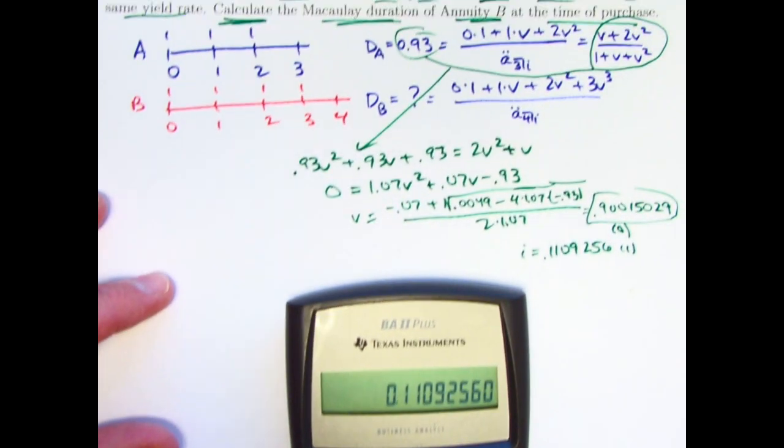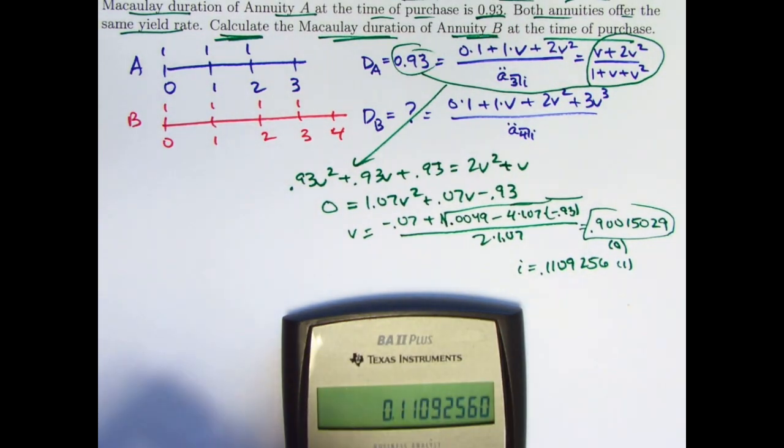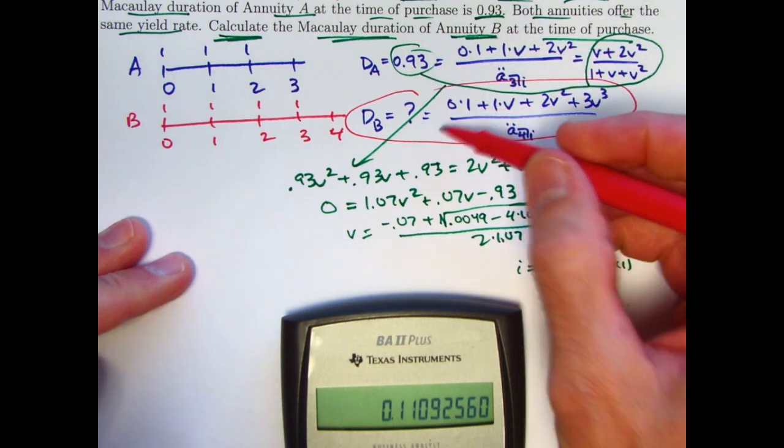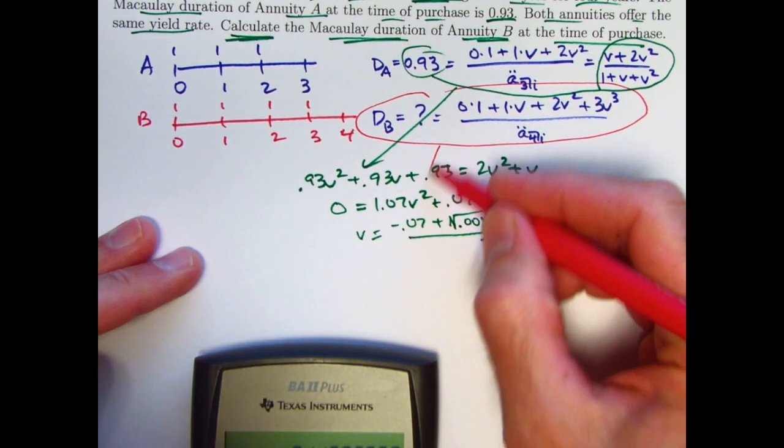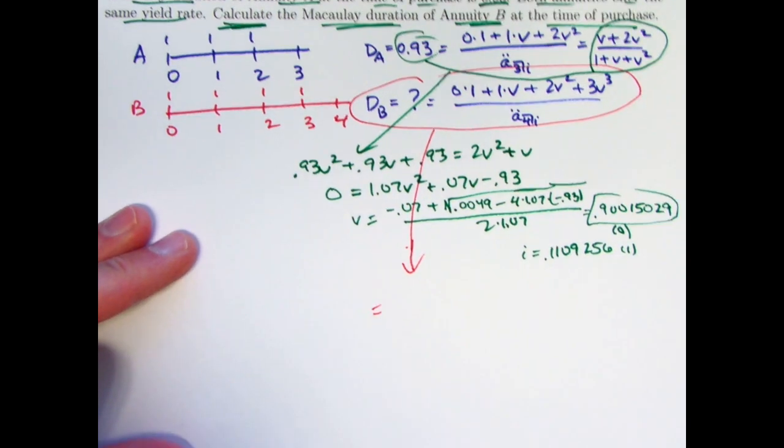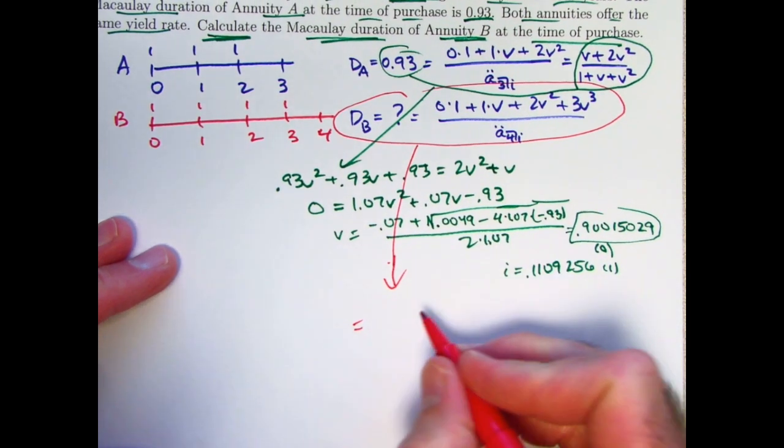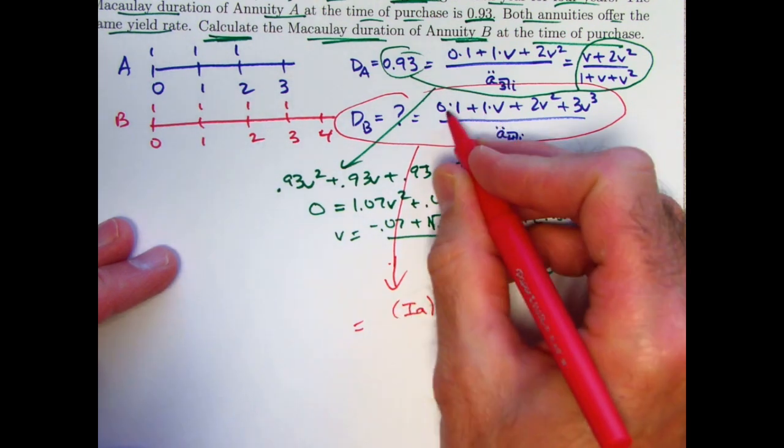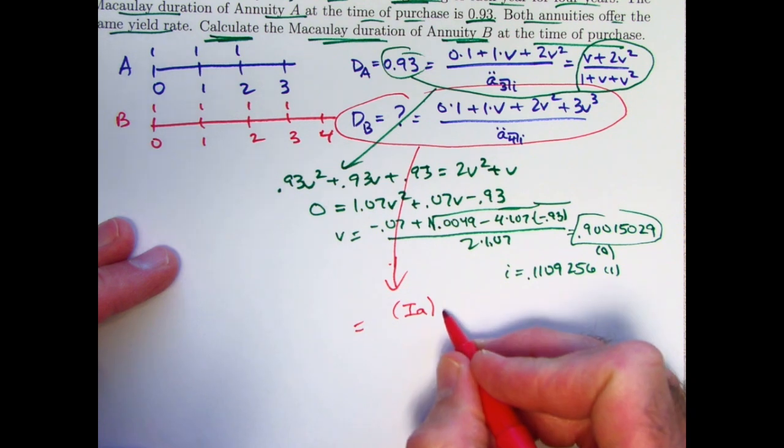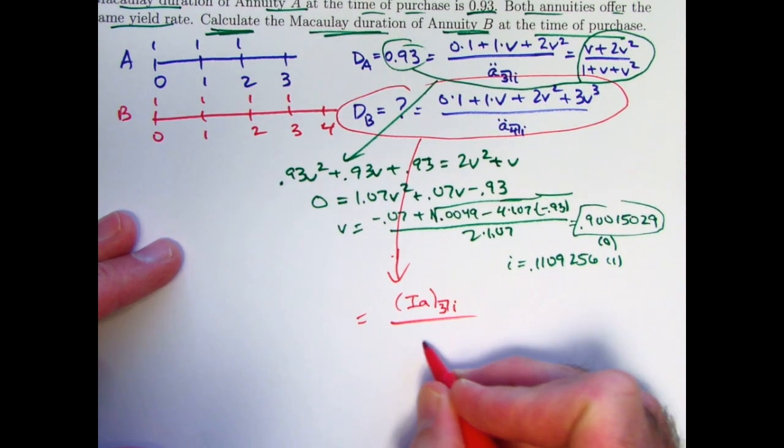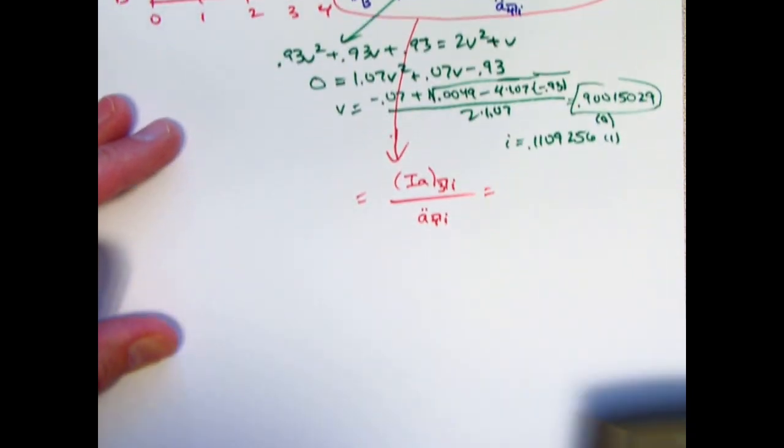And now we have what we need to finish the problem. We can just use this equation right here to help us finish it. And perhaps we should get practice realizing the top of that fraction is also the present value of an increasing annuity immediate. We could write this as (IA)₃ with 3 payments i divided by a double dot 4i. Let's just go ahead and find each of these.